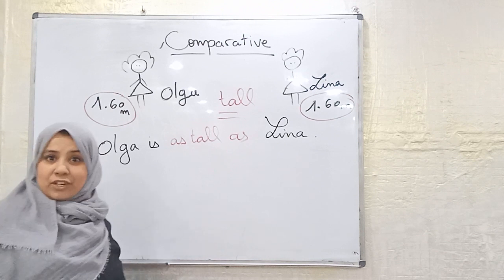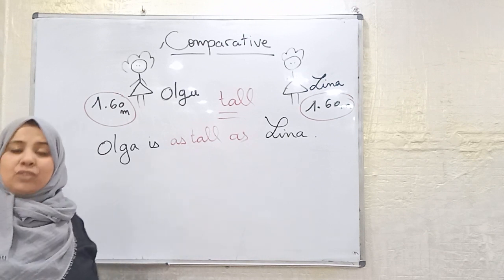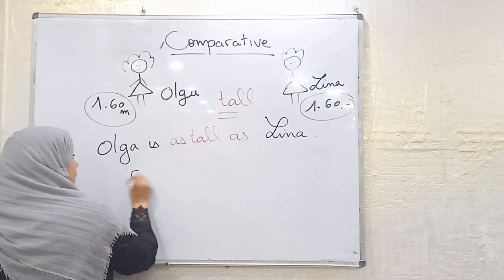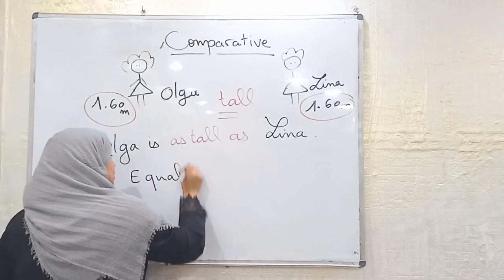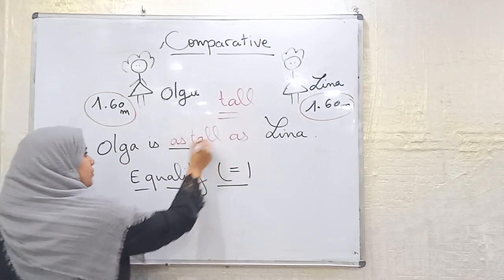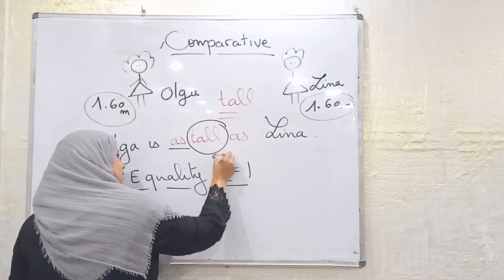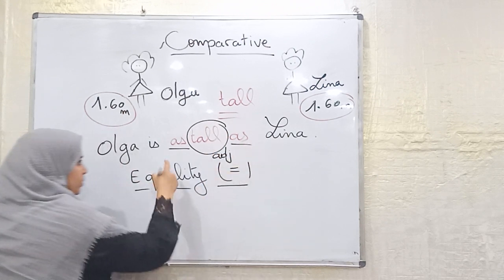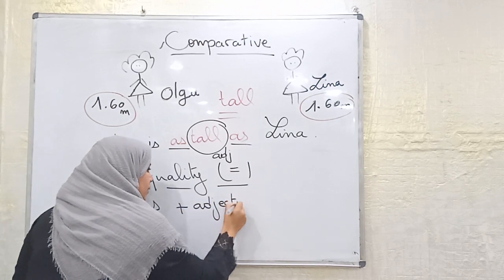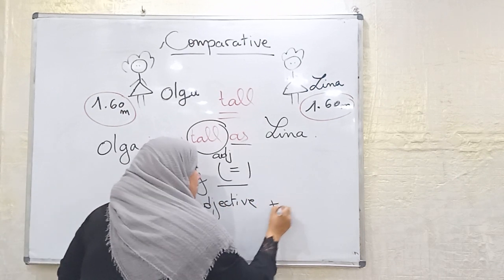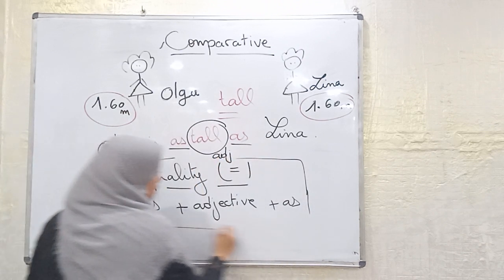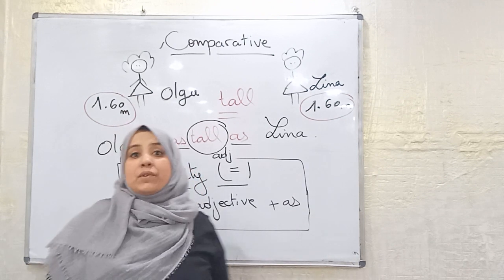And from here we can understand that to express or to form equality, we can put like this. For equality we can put, for example, look at, we have the adjective here. So we put as plus the adjective plus as. And this is the sum of the first part.